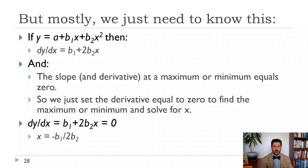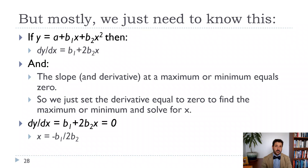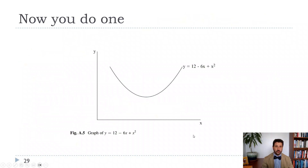The slope at a maximum or minimum equals zero, so we set b1 + 2·b2·x = 0 and solve for x. Moving b1 to the other side and dividing by 2·b2 gives x = −b1 / (2·b2). That could be a minimum or a maximum, but since we know we have an upside-down parabola — the coefficient on x² is negative — whenever we find this critical point it will be a maximum.